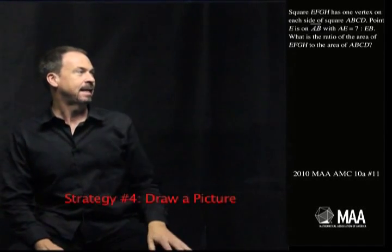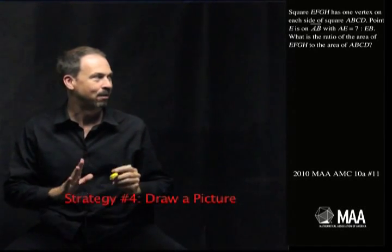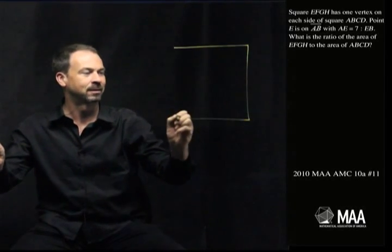So I've got a square EFGH with one vertex on each side of another square ABCD. All right, so it looks like EFGH is going to be inside big square ABCD. So I'll start drawing this.